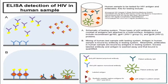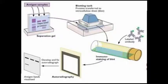HIV can be detected using the ELISA test, which is also used for a wide variety of conditions like pregnancy, STDs, thyroid disorders, hepatitis, and Ebola. To confirm the presence of HIV, a Western blot test is performed, which detects antibodies in the patient's serum.